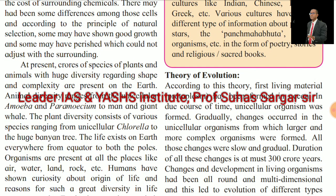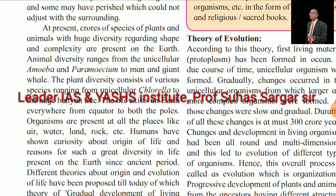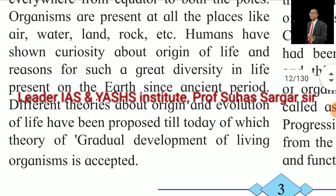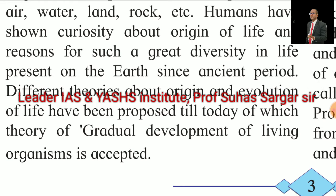At present, crores of species of plants and animals with huge diversity regarding shape and complexity are present on earth. Animal diversity ranges from unicellular amoeba and paramecia to man and agile apes. Plant diversity consists of various species ranging from unicellular algae to the huge banyan tree. Life exists on earth everywhere from equator to both poles, in air, water, land, and rock. Humans have shown curiosity about the origin of life and the reason for such great diversity since ancient times.